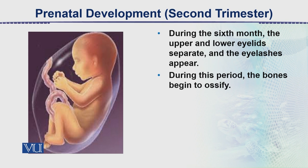اس second trimester میں جو baby ہے وو اس شکل میں آ جاتا ہے جس میں head بھی دیکھ رہے ہیں، limbs بھی دیکھ رہے ہیں۔ یہ amnion membrane سے covered ہوتا ہے، جس کے اندر amniotic fluid ہے — یہ baby کے لیے ایک aquatic environment ہے۔ اگر یہ amniotic fluid کم ہو جائے تو یہ problematic ہو جاتا ہے۔